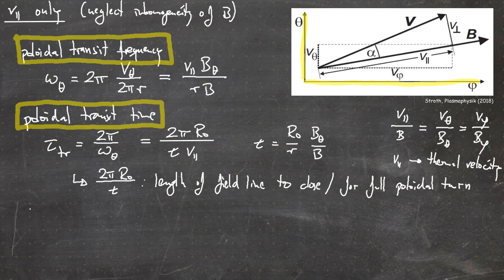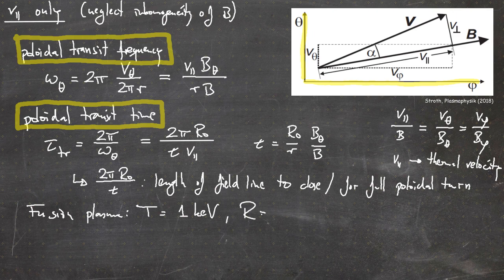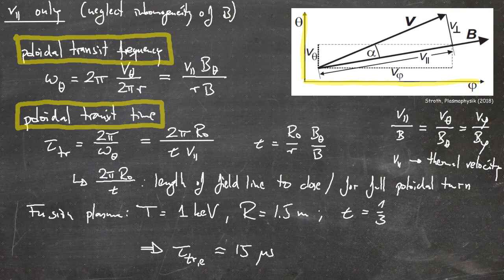For typical fusion plasma numbers — temperatures of 1 keV, a radius of 1.5 meters (a medium-sized tokamak), and a typical iota-bar of 1/3 — this results in a transit time for electrons of roughly 15 microseconds, and for ions roughly 50 microseconds to make one full poloidal transit.